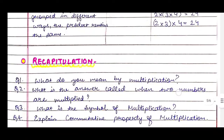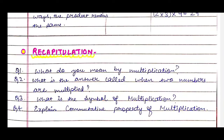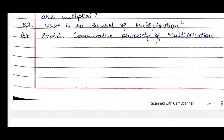After we are done with the teaching part, comes the Recapitulation part. We ask questions to students at the end of teaching. First: What do you mean by multiplication? Second: What is the answer called when two numbers are multiplied? Third: What is the symbol of multiplication? Fourth: Explain the commutative property of multiplication.